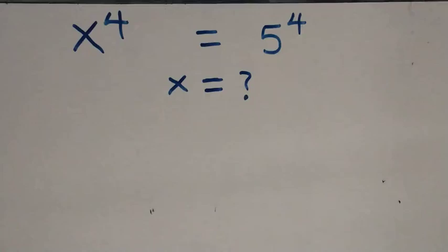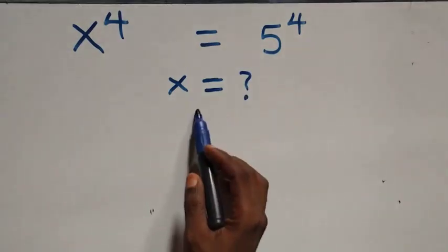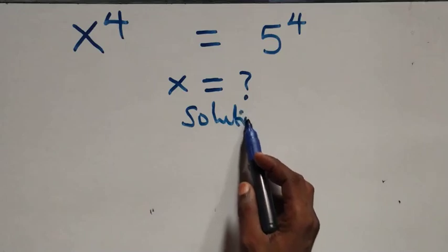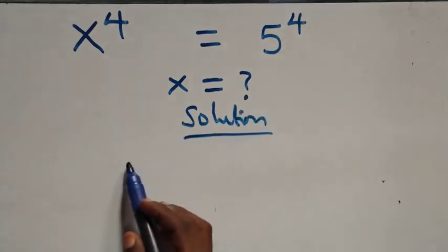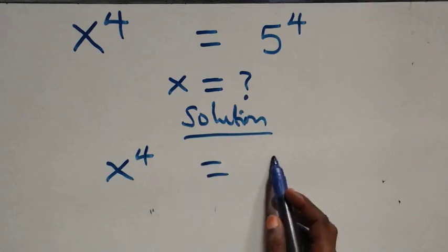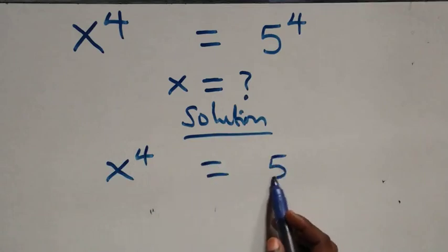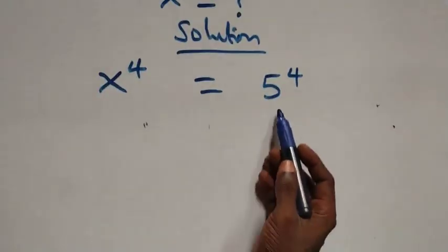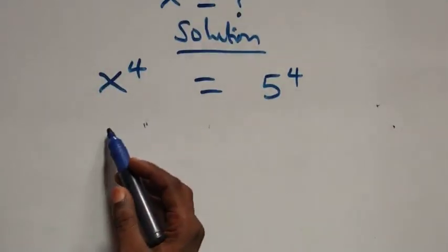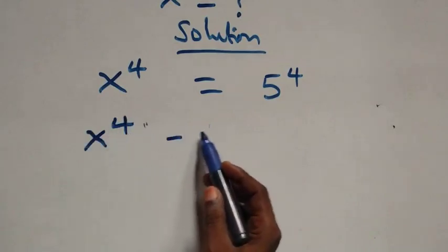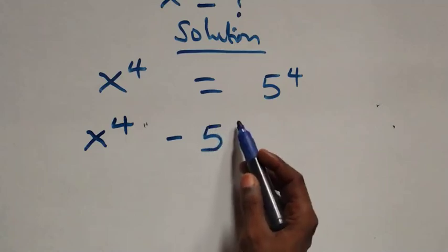Hello, you are welcome. How to solve this nice exponential equation. What we have here is x raised to power 4 equals to 5 raised to power 4. We can take 5 raised to power 4 to the left hand side, and what we have becomes x raised to power 4 minus 5 raised to power 4.